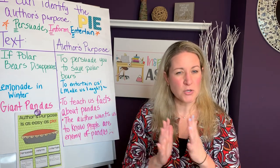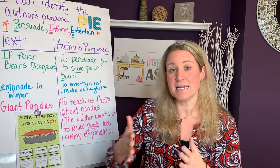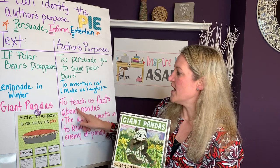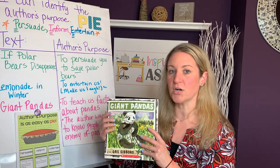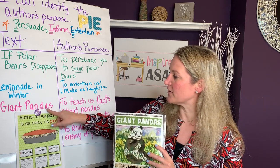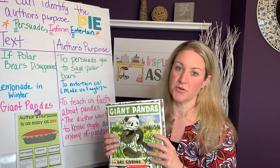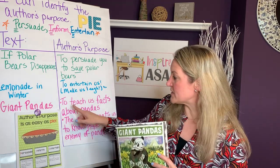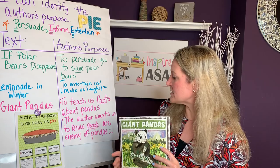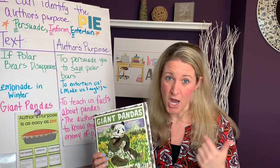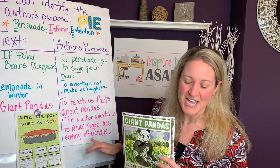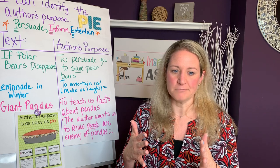In my next lesson, I might also specifically go back to teach the different reasons why an author would write the text by reading the books. For example, I might go back and specifically read Giant Pandas, and after we were done reading, I would teach my students: boys and girls, yes, this was written to teach us facts about pandas, but the author also wants us to know that humans are the enemy of pandas. So that's something I would do in a future lesson.